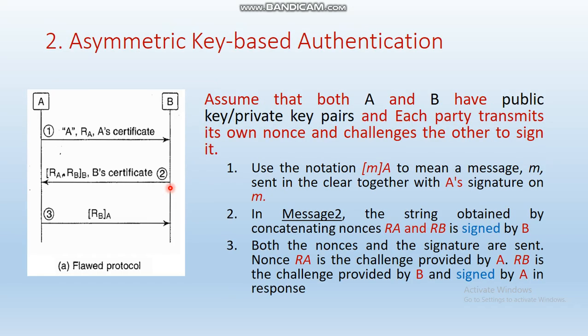The next kind of mutual authentication is asymmetric key based authentication. Assume there are two parties A and B. Both parties have public and private key pairs, and each party transmits its own nonce or random number and challenges the other party to sign it.